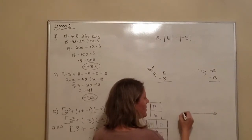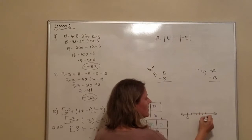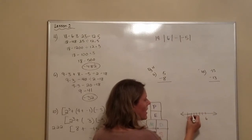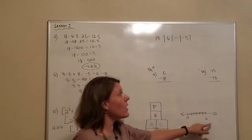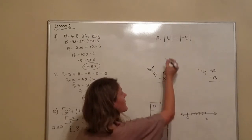We have a number line. We have zero. It is 1, 2, 3, 4, 5, 6 units away from zero. So, the absolute value of 6 is 6.